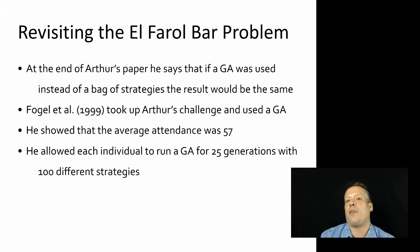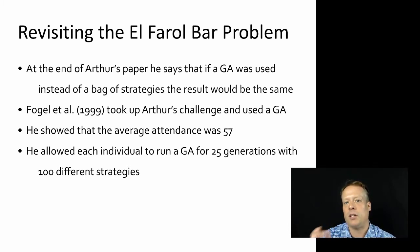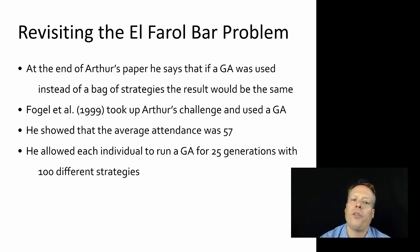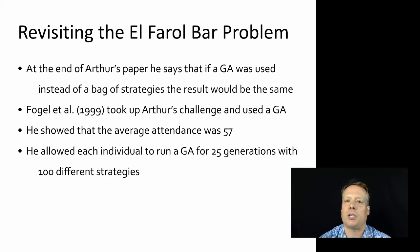At the end of every time step, each individual in the model, based upon the past history it had, would fit the data as well as possible and try to figure out whether or not to attend the next time step by using the GA to come up with an optimal attendance strategy. Fogel showed that with this approach, the average attendance was not 60 as Arthur had shown, but instead was closer to 57.